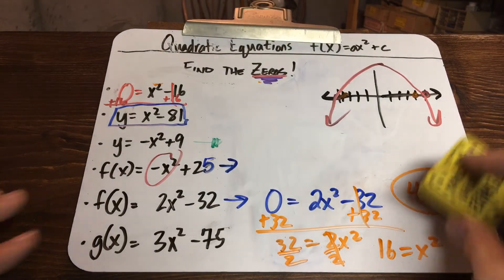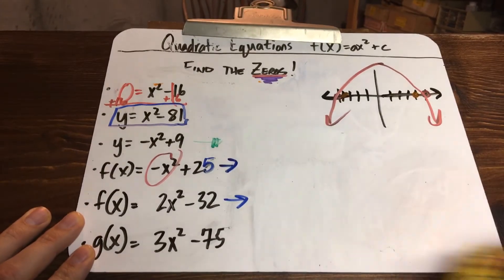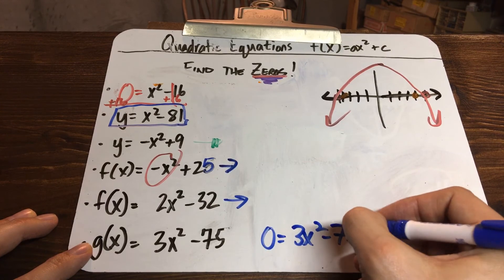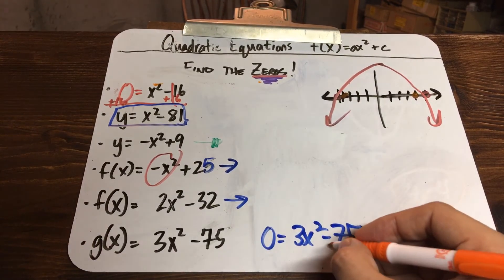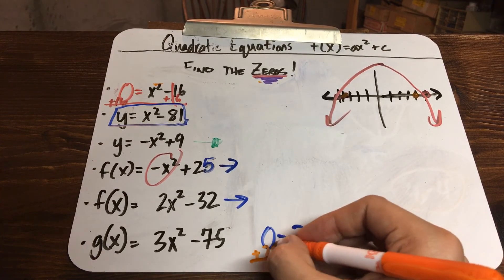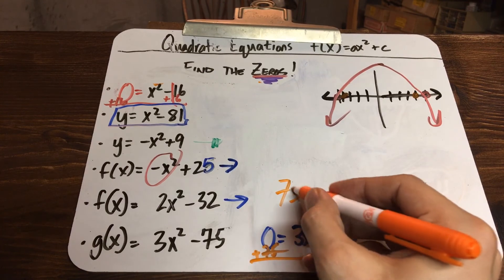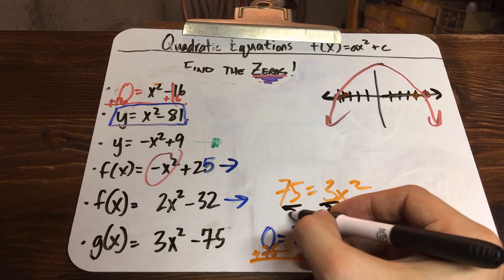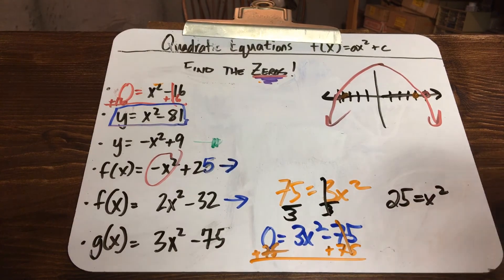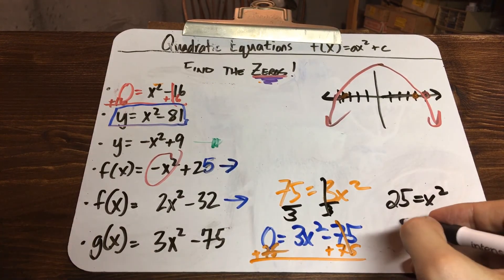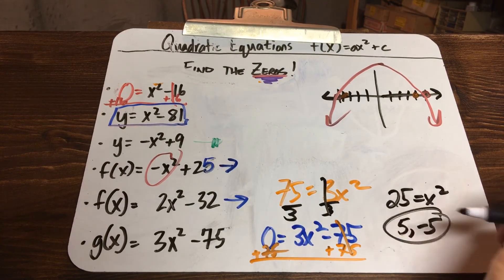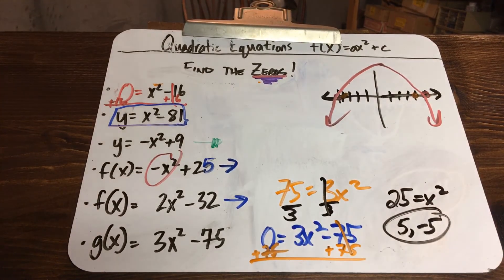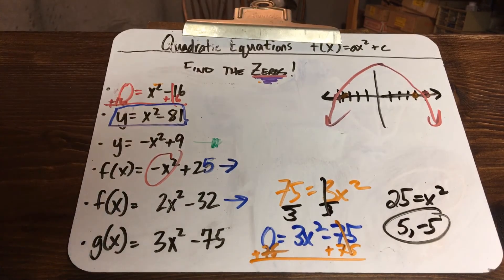For the grand finale, 3x squared minus 75: put zero in for g of x, then add 75 to both sides — 75 equals 3x squared. Divide by 3: 75 divided by 3 is 25, so 25 equals x squared. What number squared is 25? That's 5 and negative 5. So this one also has intercepts at 5 and negative 5. That's how you find the zeros, x-intercepts, and roots.